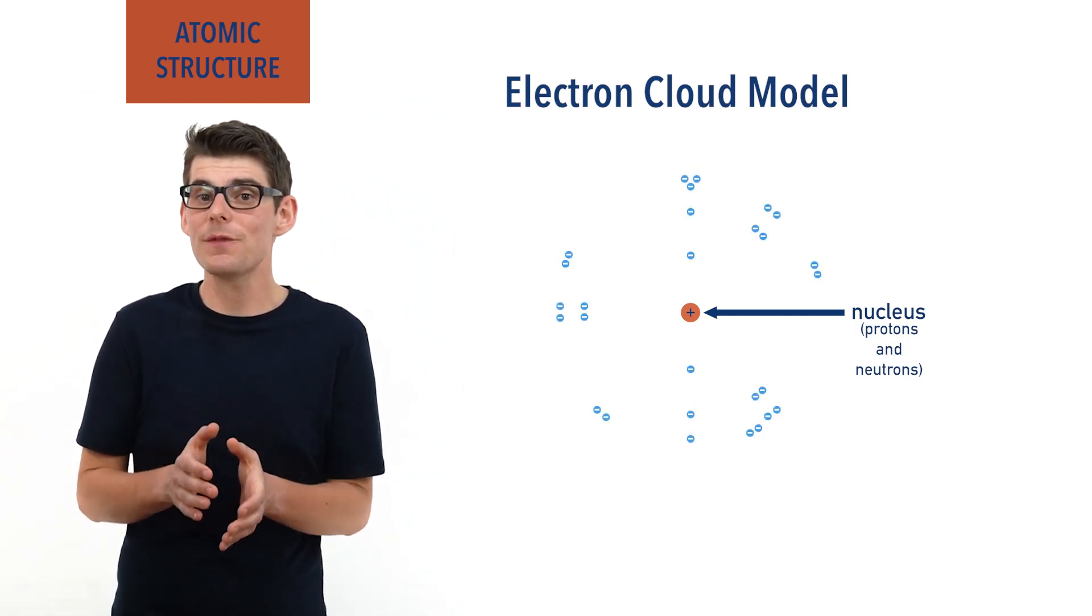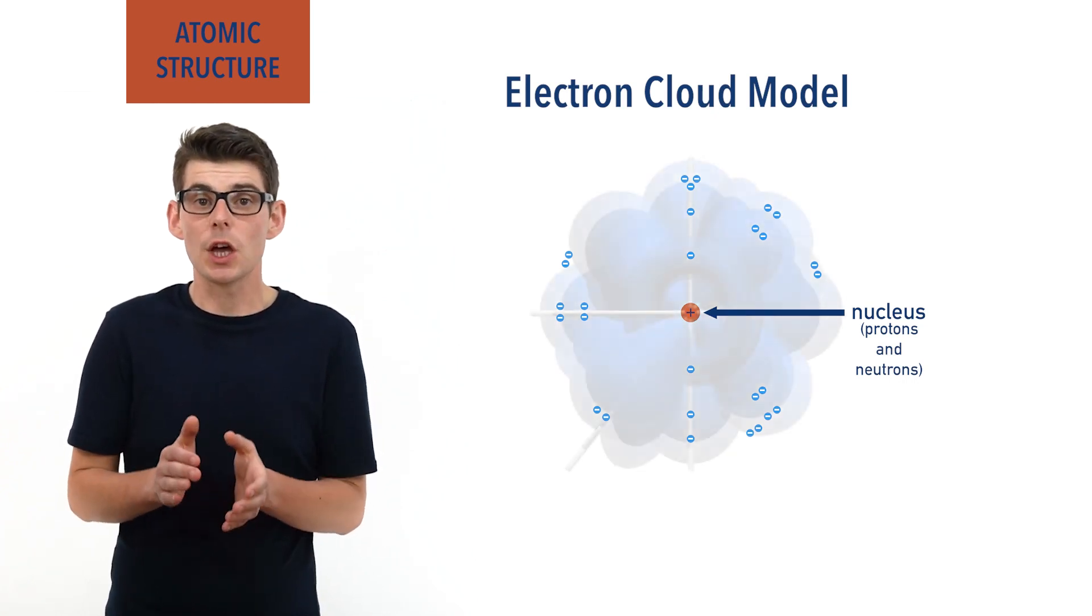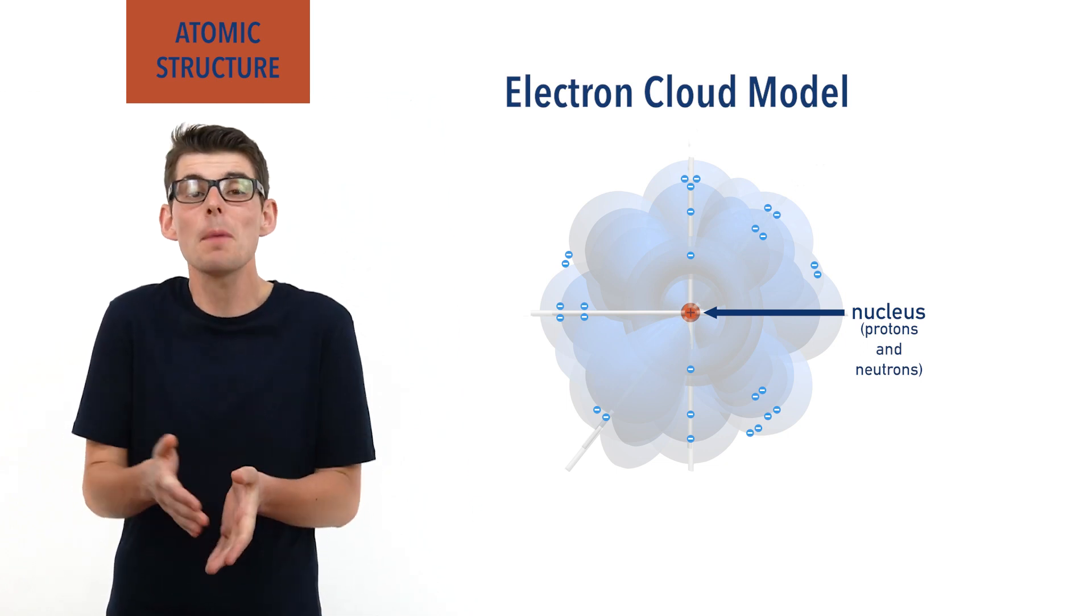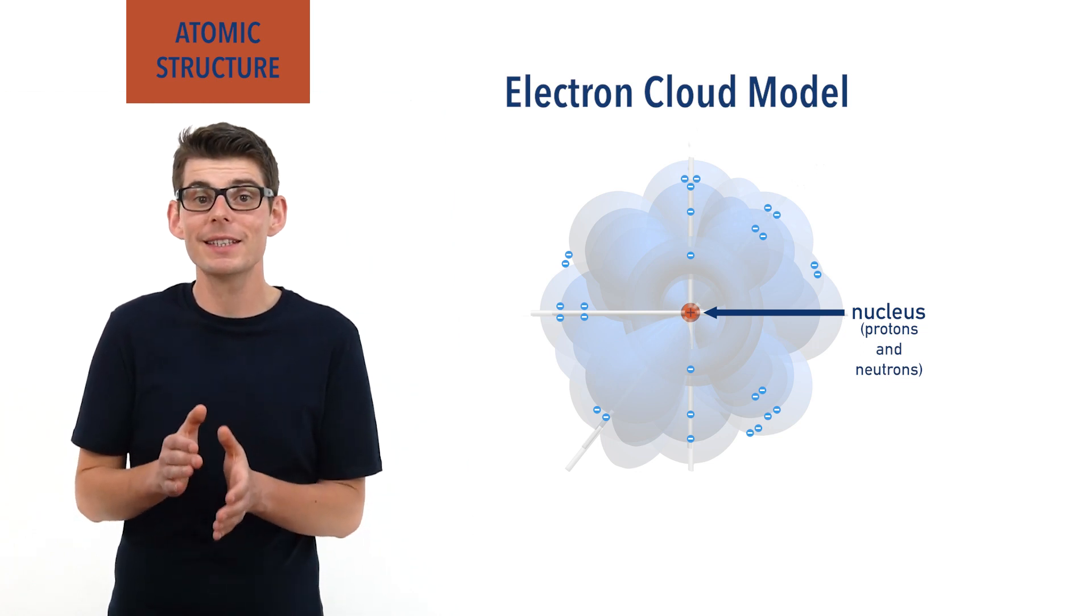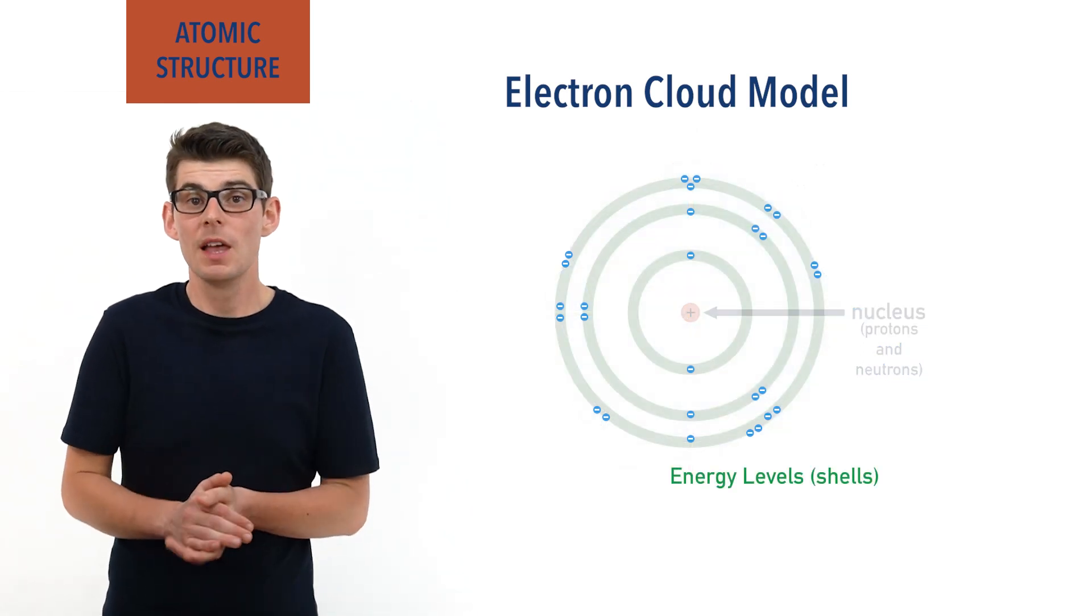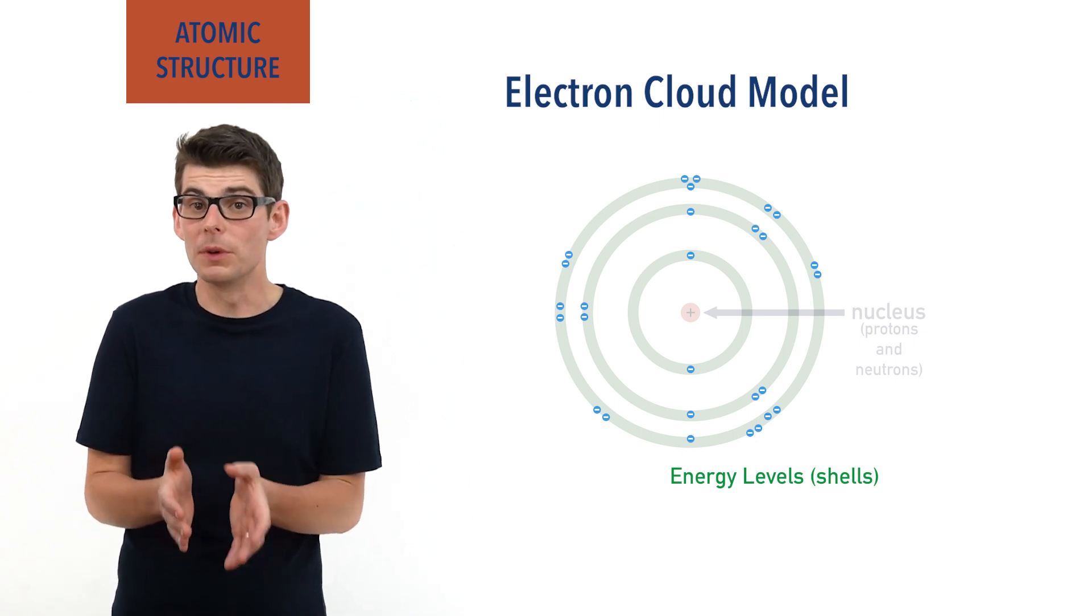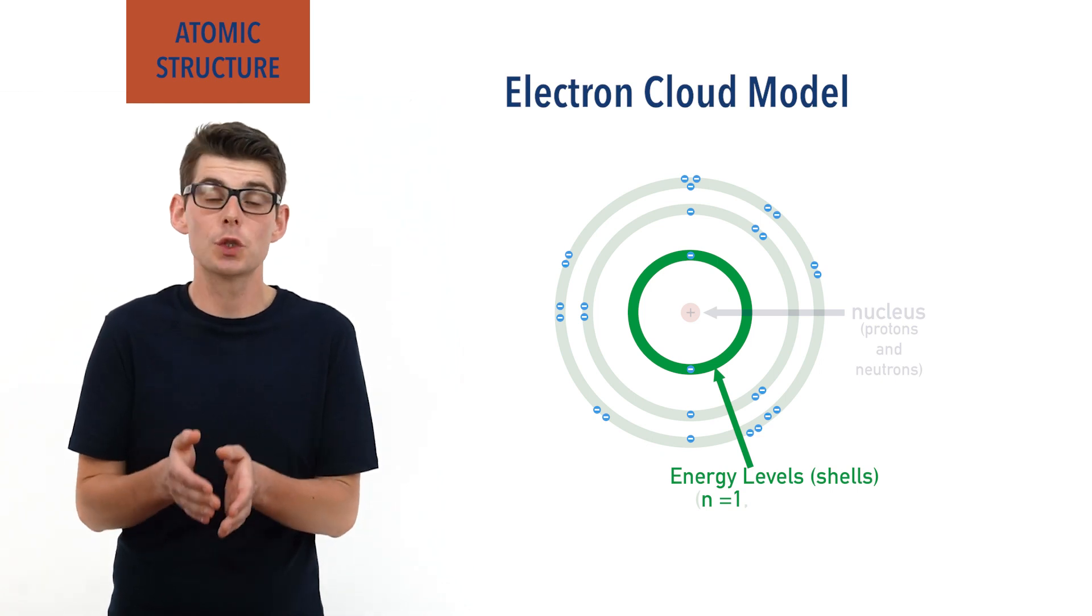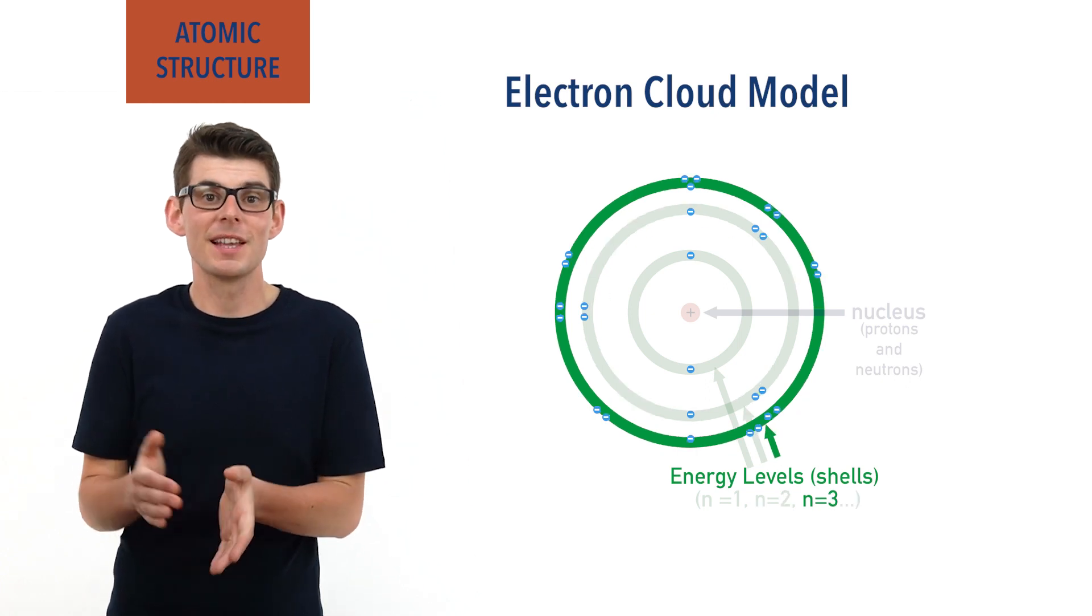The electrons exist in specific areas, or regions of space, called orbitals, and only a maximum of two electrons can exist in any one orbital, a pair of electrons. These orbitals can only exist at certain distances from the nucleus, in what are called energy levels, or shells. They are labelled with a principal quantum number n. These are whole numbers starting with 1. n equals 1 refers to the energy level closest to the nucleus, n equals 2, the next closest, n equals 3, the next closest, and so on.